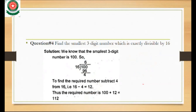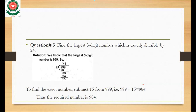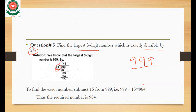Question 5: Find the largest three-digit number exactly divisible by 24. The largest three-digit number is 999. We divide 999 by 24. Since 24 has two digits, we take two digits: 99. 24 times 4 is 96. Subtracting 99 minus 96: 9 minus 6 is 3 and 9 minus 9 is 0, so we get 3. We bring down 9, making 39.